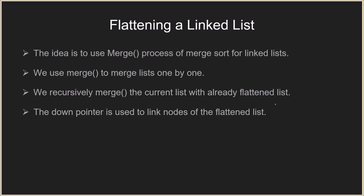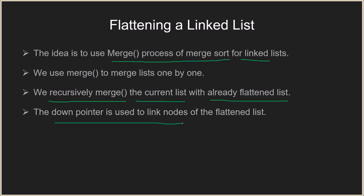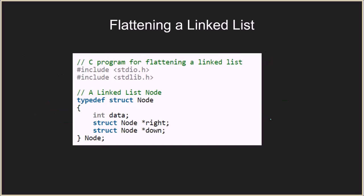To solve this problem we are going to use the merge process of merge sort for linked lists — we use merge to merge lists one by one. We take two such linked lists at a time, merge them, then keep moving forward and merging the next linked list into the already flattened one. We recursively call merge on the current list with the already flattened list. The down pointer is used to link nodes of the flattened linked list instead of the right pointer.